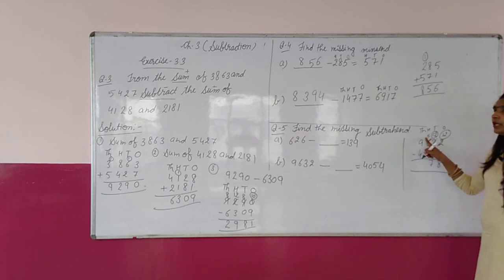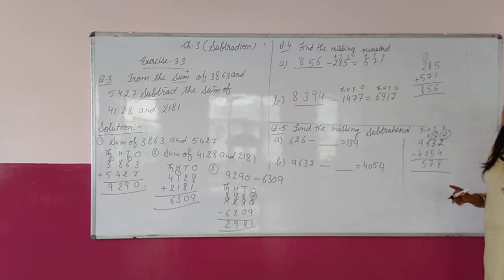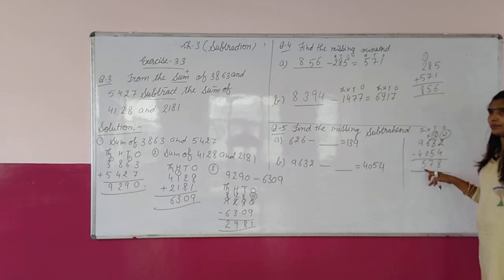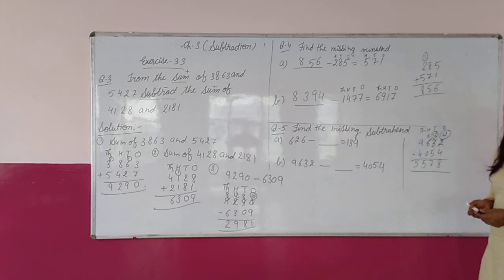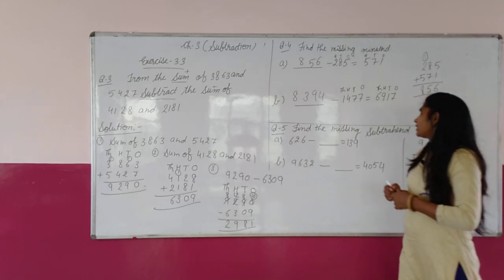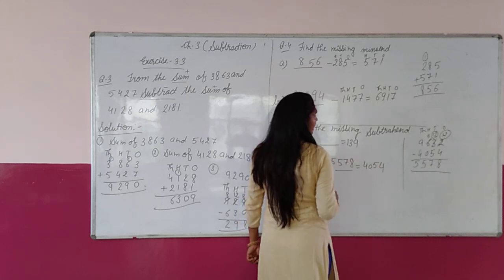Next place पे 5 है. 5 में से 0 subtract किया — 0 subtract from 5, what will come? 5. When we subtract 0 from any number, answer same आता है. अब 9 में से 4 subtract किया — what will come? 5. So the subtrahend we got is 5,578.